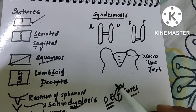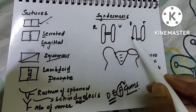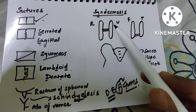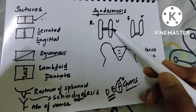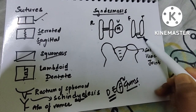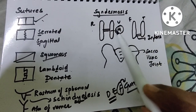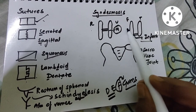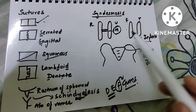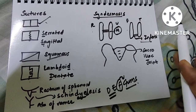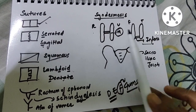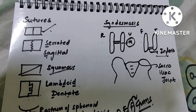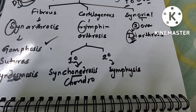Syndesmosis is a fibrous joint. Fibrous joints also include gomphosis. For syndesmosis, remember two important bone pairs: in the upper limb, radius and ulna — the middle radial ulnar joint is syndesmosis; in the lower limb, tibia and fibula — the inferior tibiofibular joint is syndesmosis. The sacroiliac joint is also syndesmosis. Try to remember this schematic: middle radial ulnar, inferior tibiofibular, and sacroiliac.